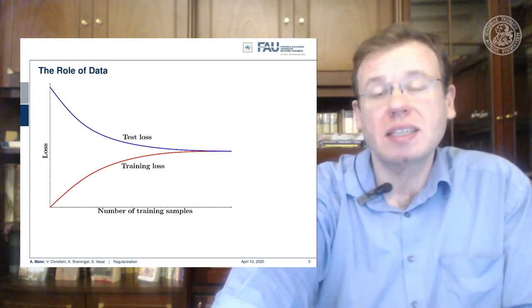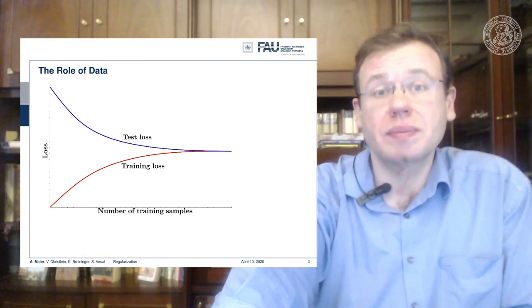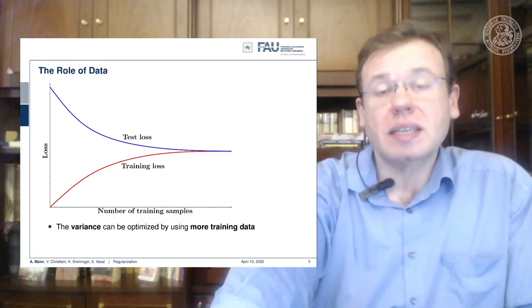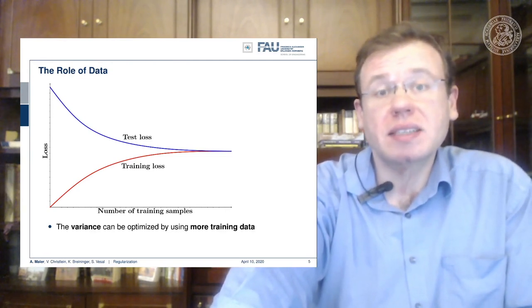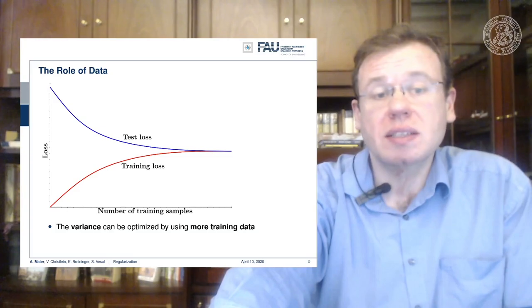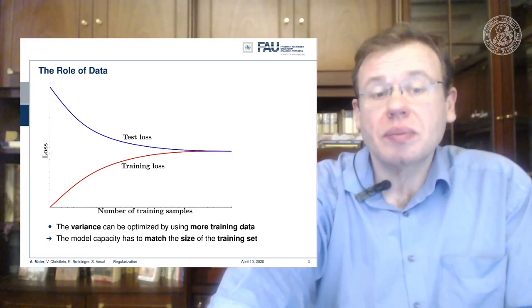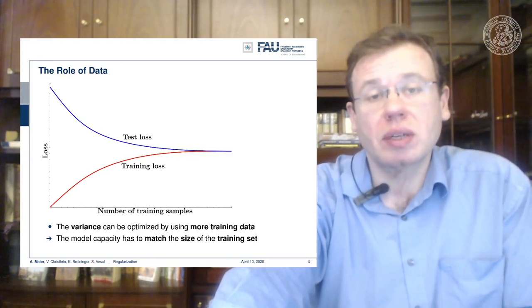We want to build general models that really work on unseen data. This is also the reason why we need so much data and why large companies are interested in collecting and storing it. Technically, we can reduce variance by using more training data. Higher-capacity models need more training data, but in the long run this is likely to give very low test losses. Unlike humans who may need only dozens of examples, these models need millions. Also, model capacity has to match the training dataset size — too high capacity will cause a bad overfit.